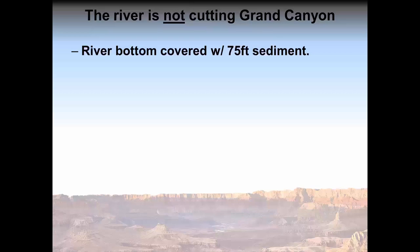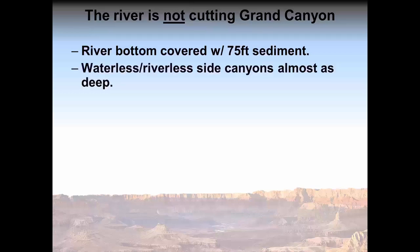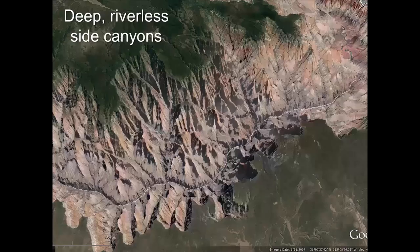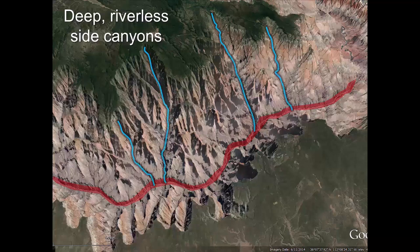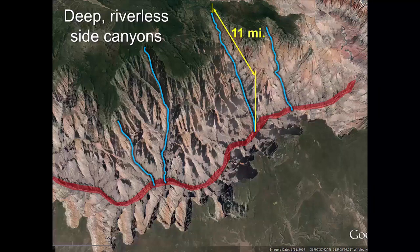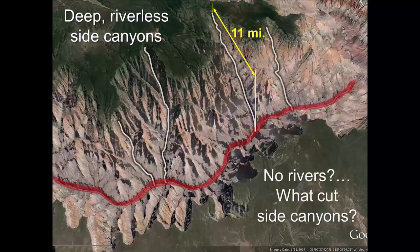Another problem with the idea that the river cut the canyon is that we observe extensive side canyons which are almost as deep as the Grand Canyon itself. If the Colorado River's near constant flow cut down to its current level over millions of years, what water source is supposed to have cut these huge riverless side canyons to nearly the same depth? The canyon along the Bright Angel Fault stretches over 11 miles horizontally away from the Colorado River. This major issue is never addressed adequately.